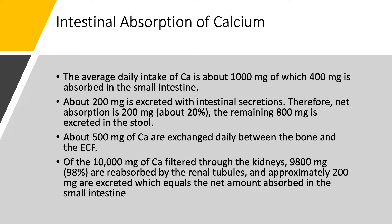500 milligrams of calcium is exchanged daily between the bone and the extracellular fluid. The kidneys filter a lot of calcium — 10,000 milligrams — but 9,800 is reabsorbed by the renal tubules, leaving us with 200 milligrams excreted in the urine, which is exactly the amount absorbed in the intestine. So with 1,000 milligrams in, 200 absorbed and 200 excreted in the urine, the rest goes to stool, and we are in a steady state — the net is zero.